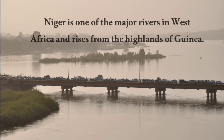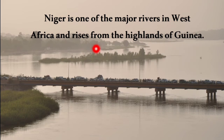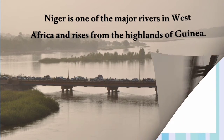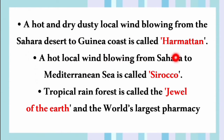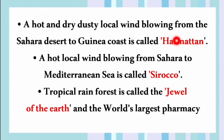River Niger is one of the major rivers in West Africa, rising from the highlands of Guinea. The hot, dry and dusty local wind blowing from the Sahara Desert to the Guinea coast is called Harmattan. The hot local wind blowing from the Sahara to the Mediterranean Sea is called Sirocco. The tropical rainforest is called the 'jewel of the earth' and the 'world's largest pharmacy'.